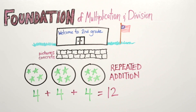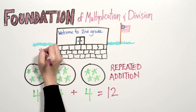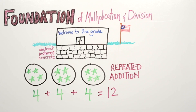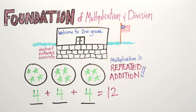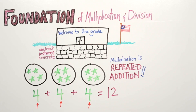This is important when your child becomes fluent in multiplication. Multiplication is repeated addition. If he knows four plus four plus four equals twelve, then he also knows four times three groups equals twelve.